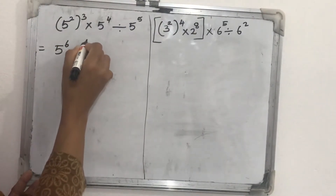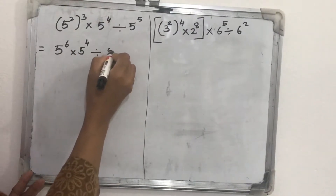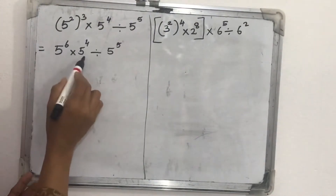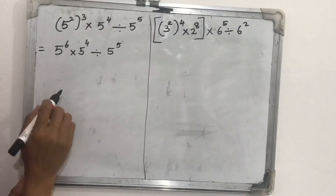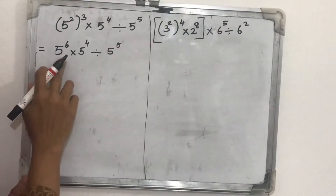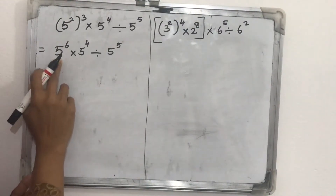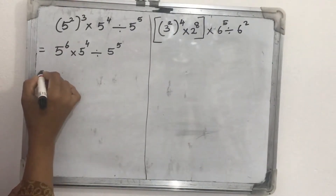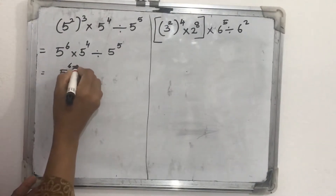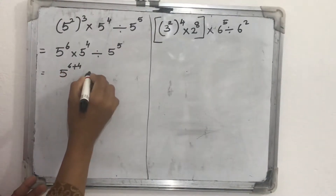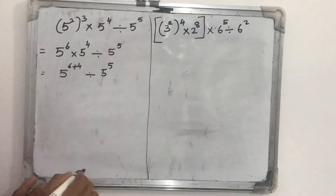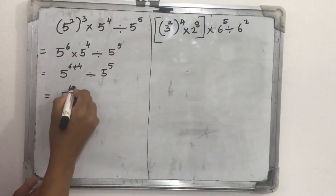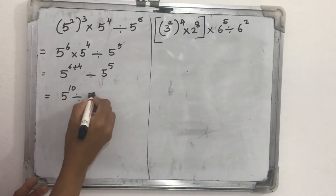Next we have five raised to six, multiplied by five raised to four, divided by five raised to five. For the multiplication part, the law is: x raised to a, times x raised to b, equals x raised to a plus b. So five raised to six times five raised to four becomes five raised to six plus four, which is five raised to ten, divided by five raised to five.